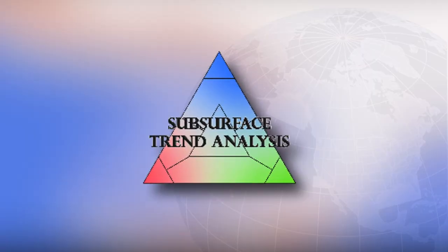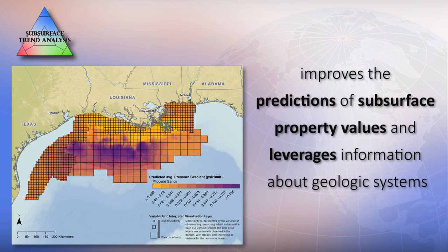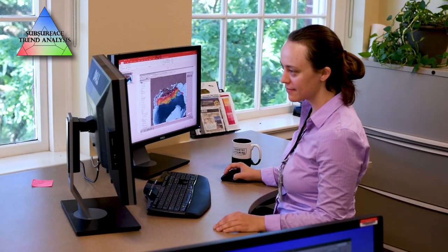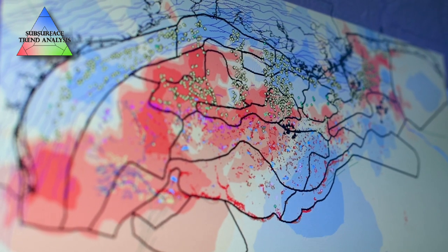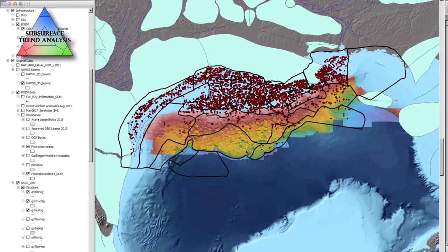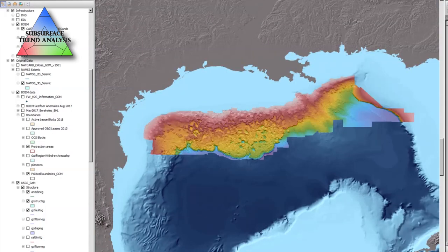The Subsurface Trend Analysis Tool improves the predictions of subsurface property values and leverages information about geologic systems. This tool allows us to look at the subsurface in a different way — by using geologic knowledge, we get to paint a picture of what the statistics are telling us. A key strength of this tool is how it integrates with other tools within the Offshore Risk Modeling suite, and its power only grows as we add to that information through other methods.